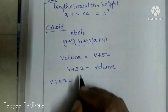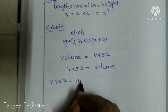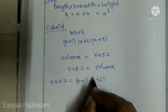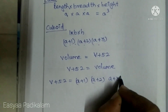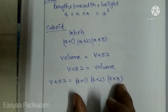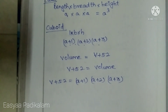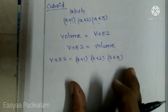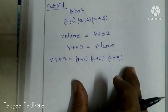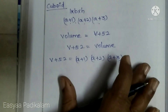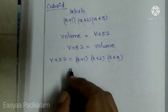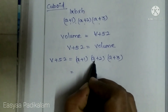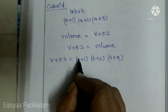So, using the formula: cube (a+1), (a+2), (a+3). We will do normal multiplication. Equal to (a+1) multiplied by (a+2) first.